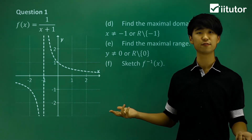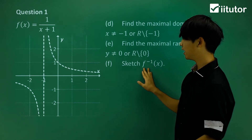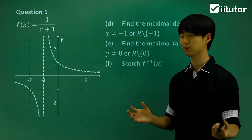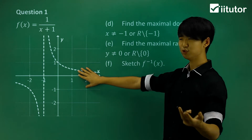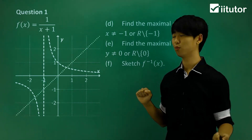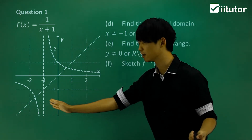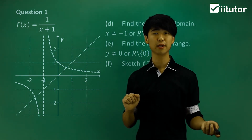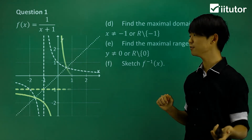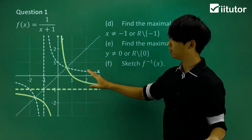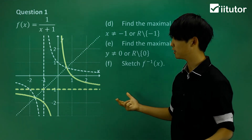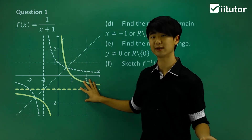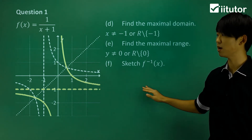Part f asks me to sketch the inverse function we found earlier. An inverse function is just an interchange between x and y values — we're swapping them around. To draw it, I'm going to draw the line y = x as a dotted line, and then literally reflect the original graph off that y = x line. The solid yellow line is my inverse function, and the dotted line is my new asymptote. That's how I sketch my inverse function.